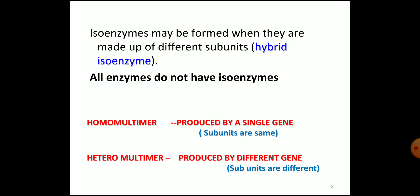Isoenzymes may be formed when they are made up of different subunits — that is hybrid isoenzymes. Not all enzymes have isoenzymes; only certain enzymes have isoenzymes when there are different subunits. The subunits may be either a product of a single gene — in which case the subunits are the same, known as homomultimers — or if produced from different genes, subunits may be different, called heteromultimers.